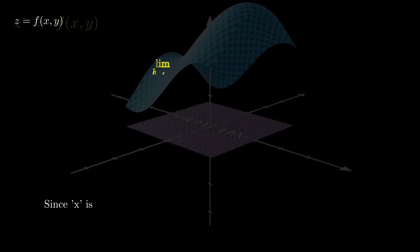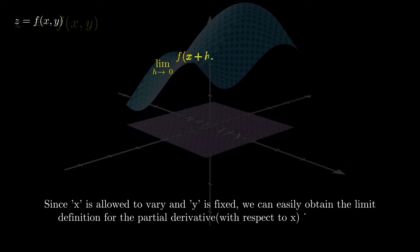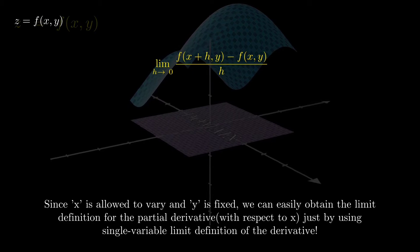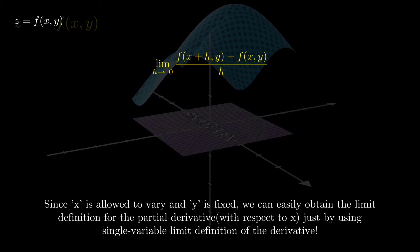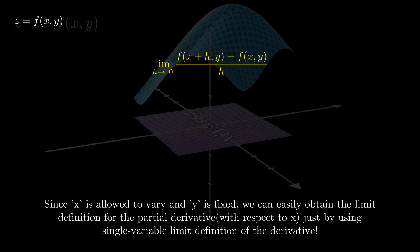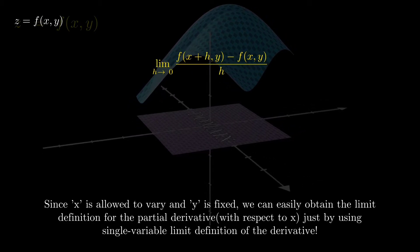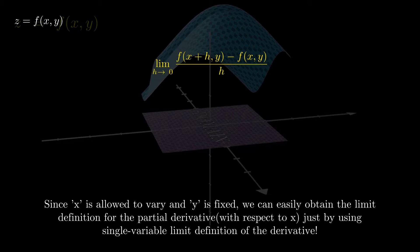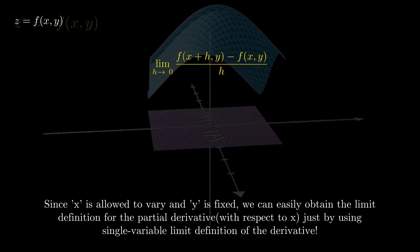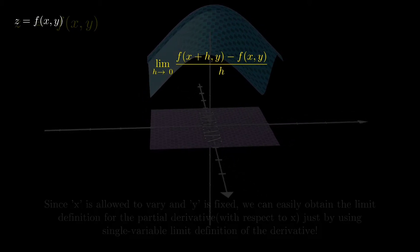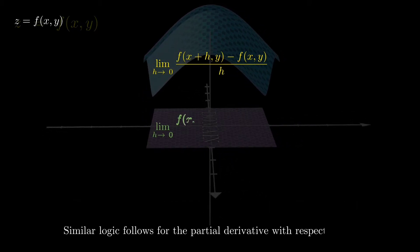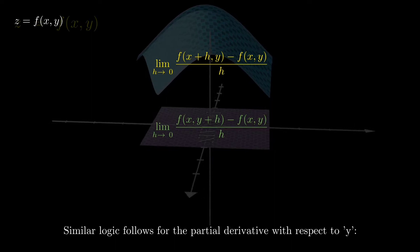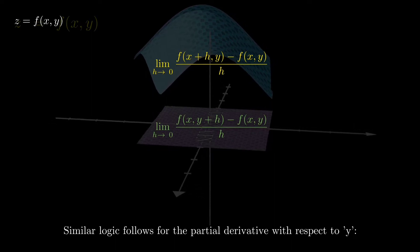Since x is allowed to vary and y is fixed, we can easily obtain the limit definition for the partial derivative with respect to x just by using the single variable limit definition. Similar logic follows for the partial derivative with respect to y.